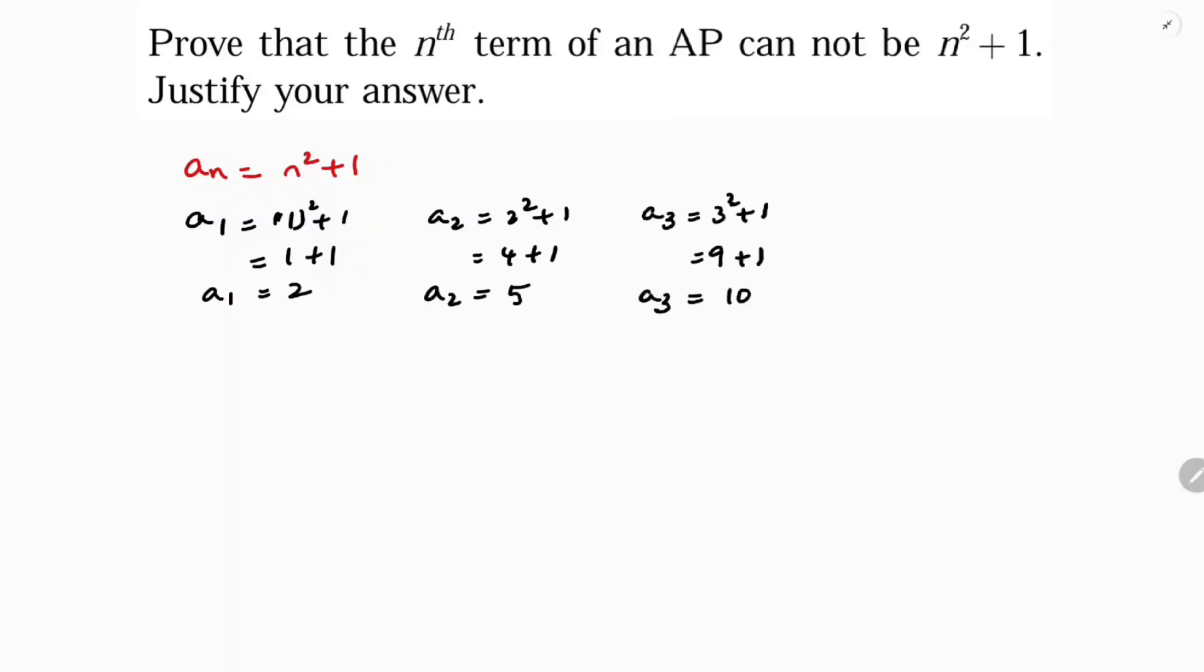Now I'll check whether the series is in AP or not. I'll check with a2 minus a1, it should be equal to a3 minus a2. So a2 is 5 minus 2, it should be equal to 10 minus 5. 5 minus 2 is 3, 10 minus 5 is 5. So a2 minus a1 is not equal to a3 minus a2.